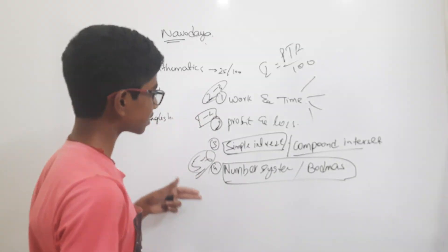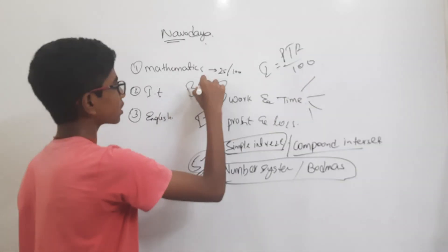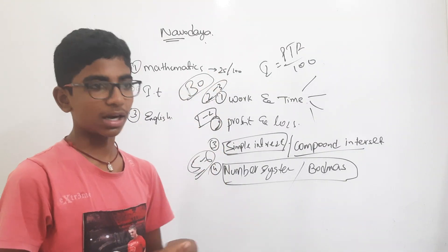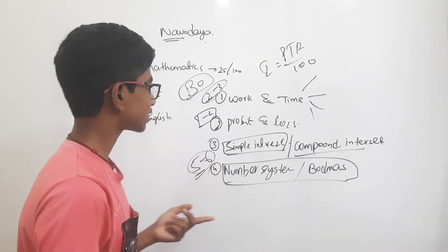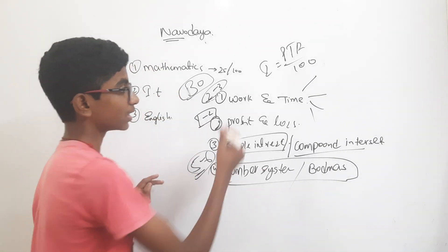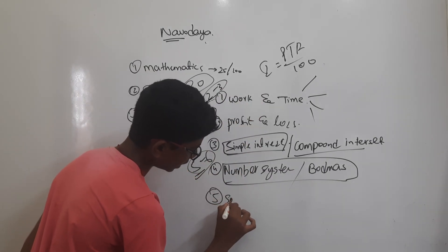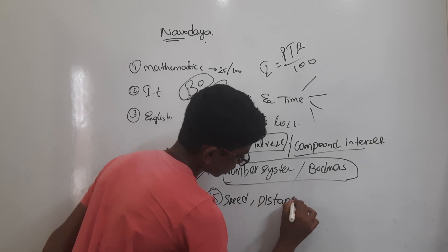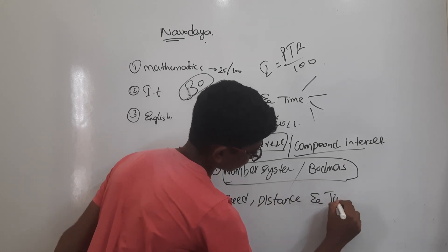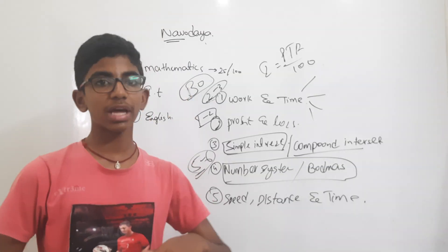If you learn these lessons mainly, we will get minimum 30 marks confirmed, guaranteed. Another lesson is Distance and Time. This is also an important lesson. Speed, Distance and Time.